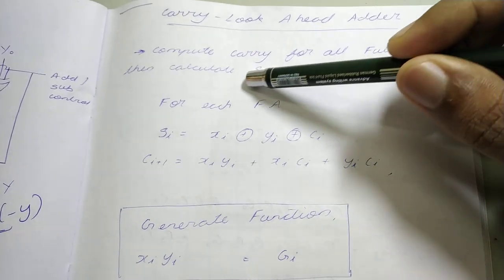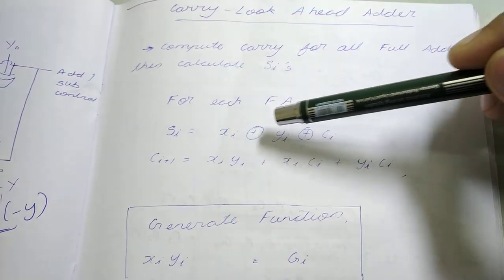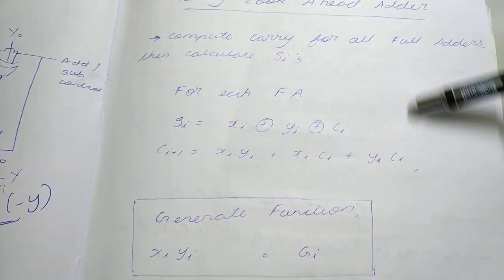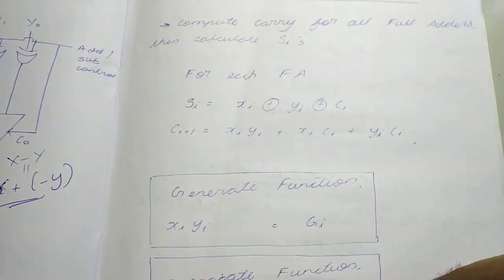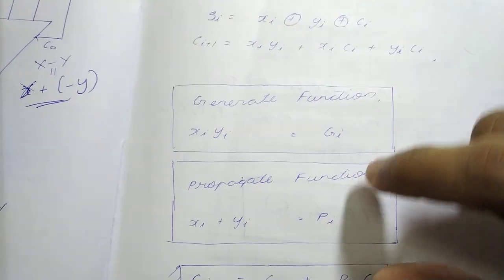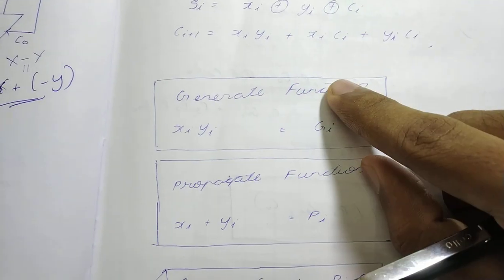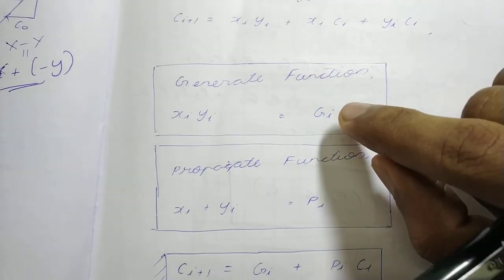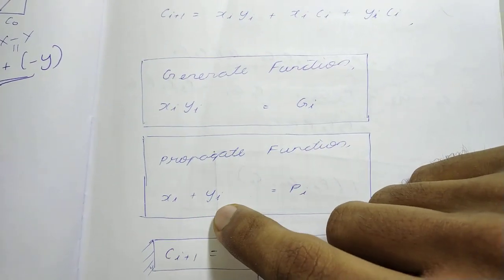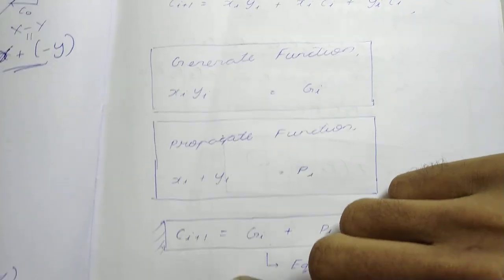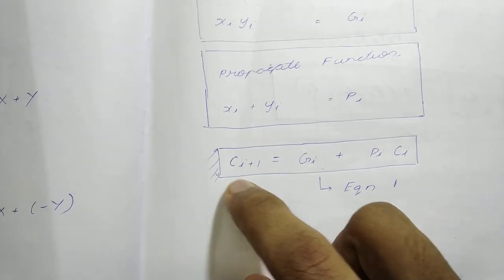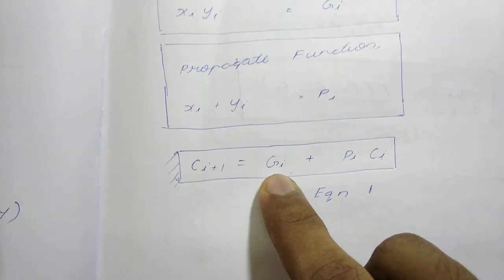From before, for each full adder si is xi xor yi xor ci and ci plus 1 is xi yi plus xi ci plus yi ci. For the carry look-ahead adder we have two functions gi and pi. Gi is called the generate function and pi is called the propagate function. Gi is defined as xi yi and pi is defined as xi plus yi. The equation is ci plus 1 equals gi plus pi ci.